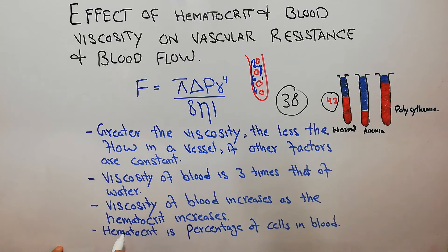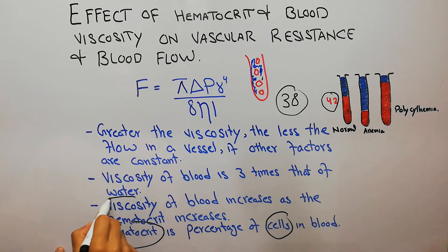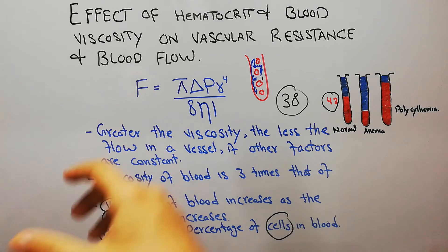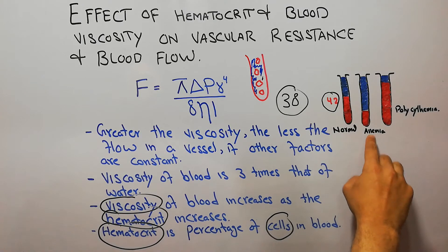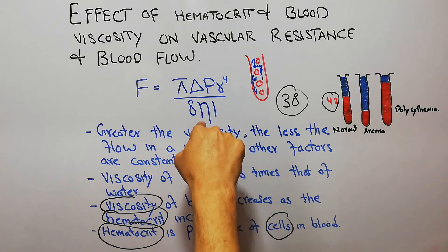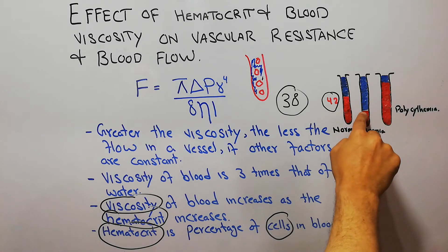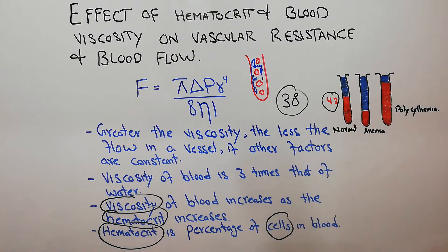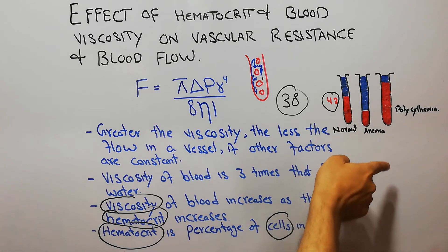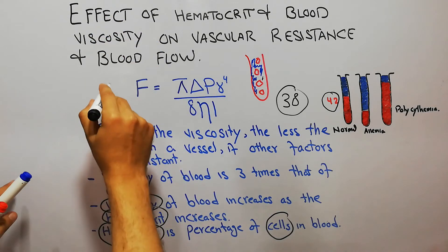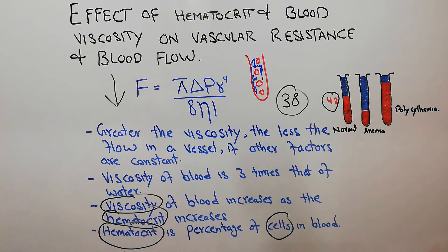Hematocrit represents cells, and viscosity increases as hematocrit increases. Viscosity depends on hematocrit, and hematocrit depends on the number of cells. In anemia, the number of cells decreases, so viscosity also decreases and flow increases. In polycythemia, the number of cells increases, so hematocrit increases, viscosity increases, and flow automatically decreases because viscosity and flow are inversely proportional.